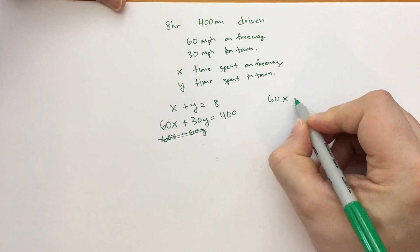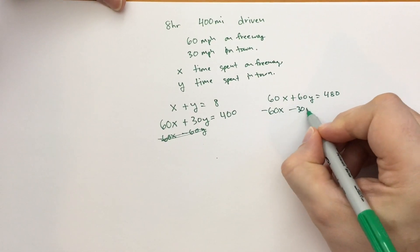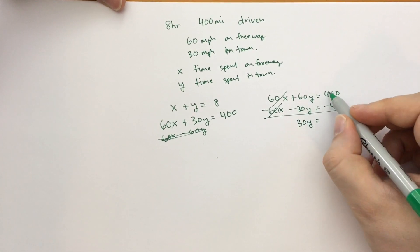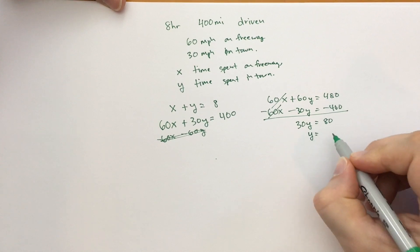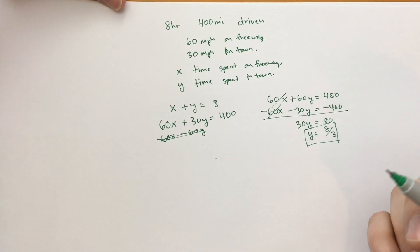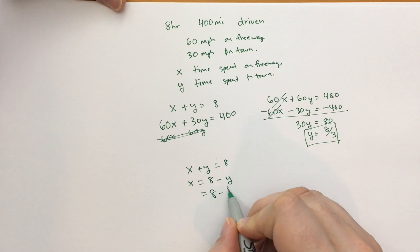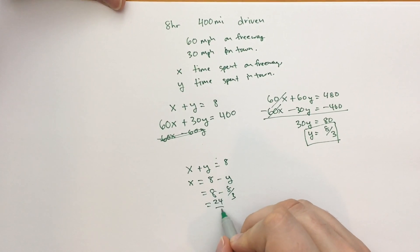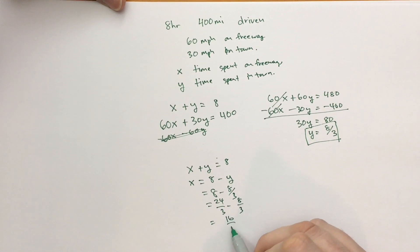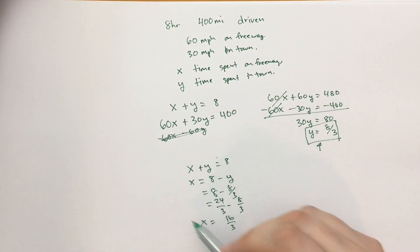Multiply the first equation by 60: 60x plus 60y equals 480. Subtract the second equation: 60y minus 30y gives 30y, and 480 minus 400 gives 80, so y equals 8 thirds — that's how much time he spent in towns. Then x equals 8 minus y, which is 8 minus 8 thirds, which is 24 thirds minus 8 thirds, which is 16 thirds. The problem asked how long he spent in towns, and y equals 8 thirds is the answer.